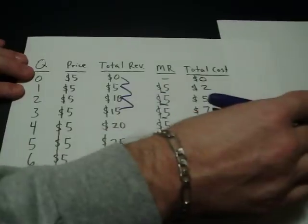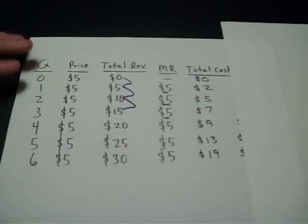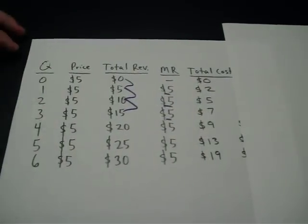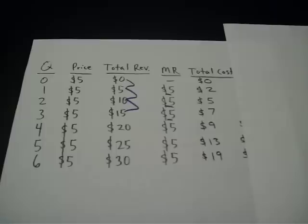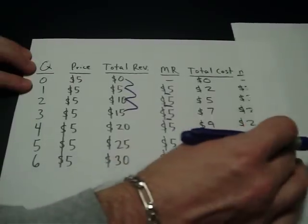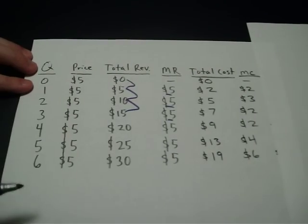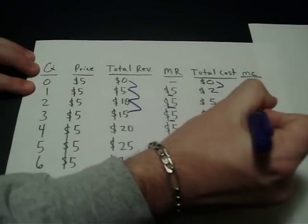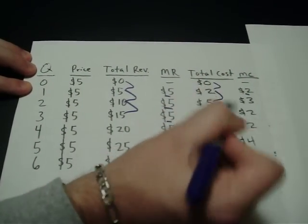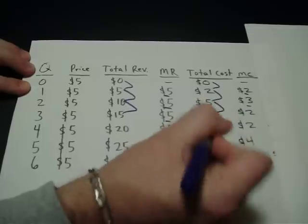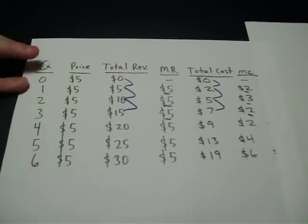Next, I put in total cost — just how much it's costing them to produce zero, one, two, three, four, five, on down the line. Next, I've got marginal cost. Marginal just means each additional. So from one to the next, two dollars. Here and here, cost an additional three dollars. Here and here, cost an additional two dollars.